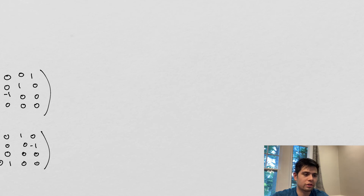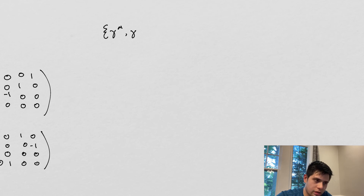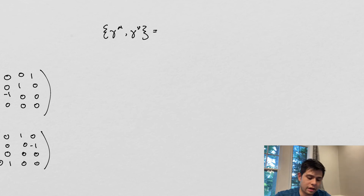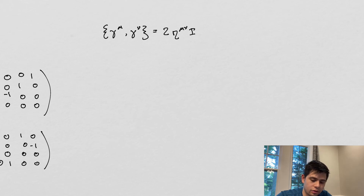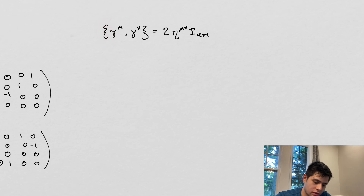This is where we jump a little bit into group theory — where gamma mu, gamma nu... if this is something you're interested in me proving, for the sake of brevity and time I'll do that on my Patreon page. We have this here — these curly brackets denote something called the Clifford algebra — gamma mu anti-commutes with gamma nu. The book doesn't go that deep into this, and so I'm not going to go that deep either, but I'll go a little further than the book.